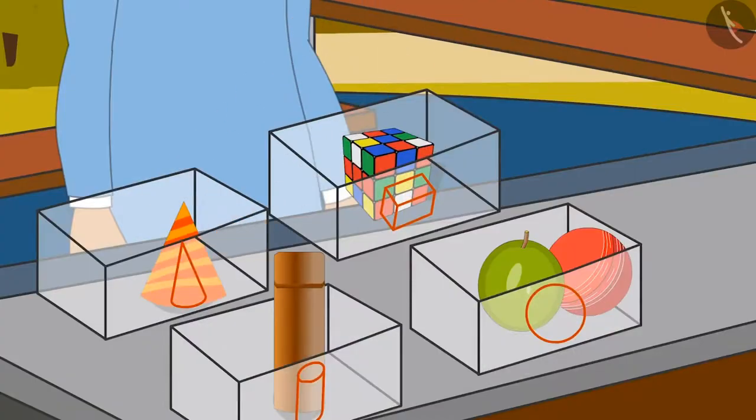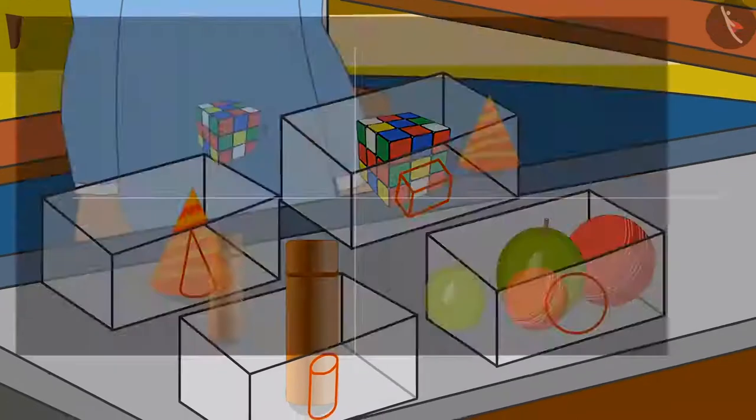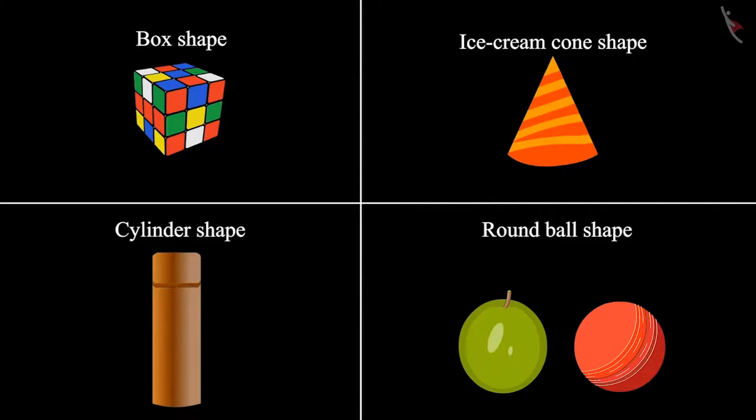Chotu and Neha identified the shapes of all the objects and placed them in different boxes. So, children, did you see how Chotu and Neha identified four different shapes and kept them in different boxes? Like a round ball shape, ice cream cone-like shape, box-like shape and cylinder shape.